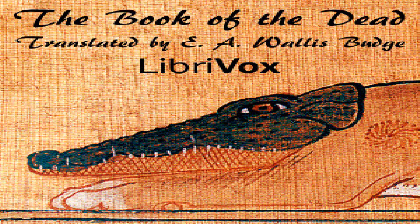The sixty-fourth chapter was very highly esteemed and believed to be one of the oldest parts of the Book of the Dead. Already in the eleventh dynasty it existed in two versions: one thought to have been composed in the first dynasty and the other in the fourth dynasty. The longer version is entitled simply 'the chapter of coming forth by day in the underworld,' but the shorter is described as 'the chapter of knowing the chapters of coming forth by day in a single chapter,' suggesting it contained the essence of all the chapters of the Book of the Dead. Several chapters are called chapters of coming forth by day.